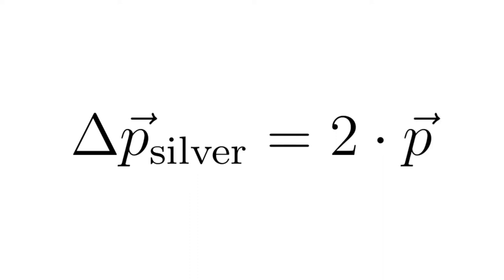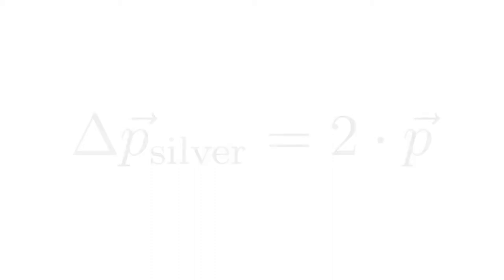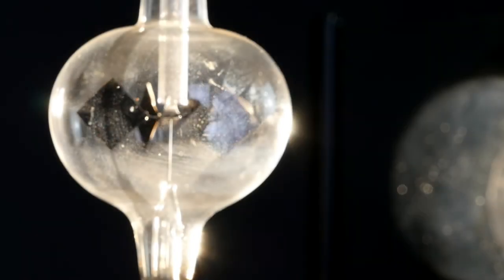Since the light is reflected on the silver side, there is a momentum change of delta P silver is 2 times P, which would cause the mill to turn towards the black side of the platelets.